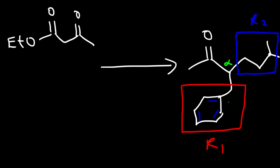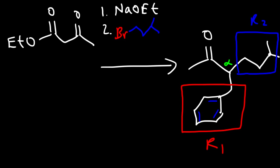Here is the alpha carbon that connects them. The first step, as always, is the use of the base sodium ethoxide. In the second step, we need to add one of the R groups — I'm going to choose this one. Instead of attaching it to the alpha carbon, we're going to attach it to a bromine atom, giving us this R group. Counting the carbons: 1, 2, 3, 4, with a methyl group on carbon 3.